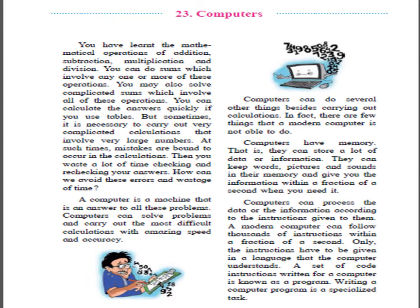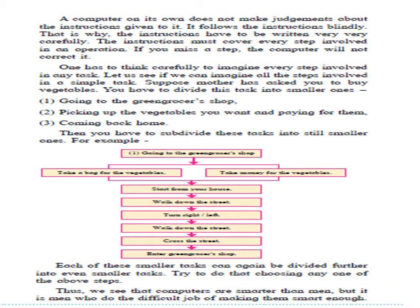Writing a computer program is a specialized task. A computer on its own does not make judgments about the instructions given to it — it follows the instructions blindly. That is why the instructions have to be written very carefully; they must cover every step. One has to think carefully to imagine every step involved in any task. Let us see if we can imagine all the steps involved in a simple task.